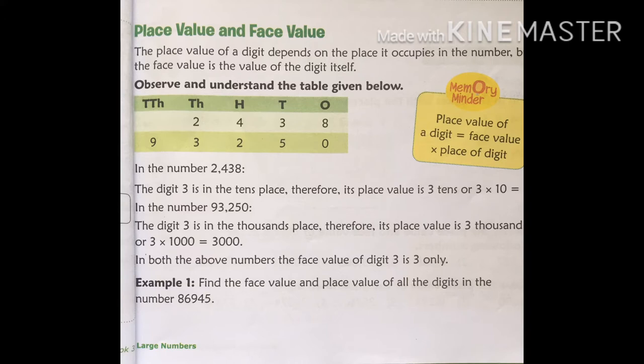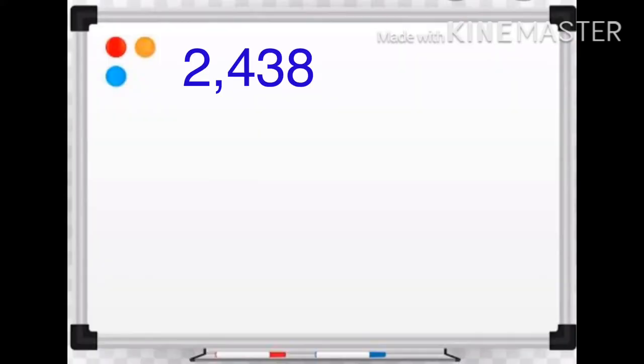here the number 2438 is given to us. How can we write the place value of each digit? In this number, the digit 8 is in the ones place. Therefore, its place value is 8 ones, or 8 multiplied by 1 equals 8.